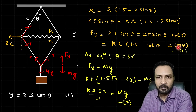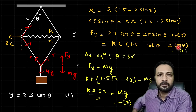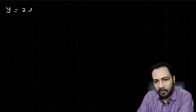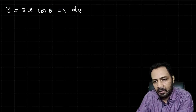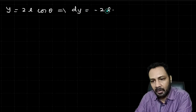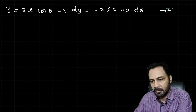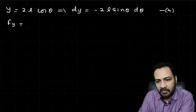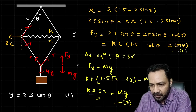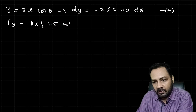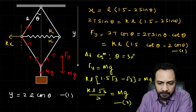Now for the perturbation analysis: Y = 2L cosθ, so differentiating gives dY = −2L sinθ · dθ. Since moving downward decreases θ, we take this with the appropriate sign. This is equation 4. We also differentiate Fy(θ) = KL(1.5 cotθ − 2cosθ). Differentiating: dFy = KL(−1.5 cosec²θ · dθ + 2sinθ · dθ).